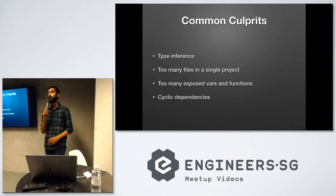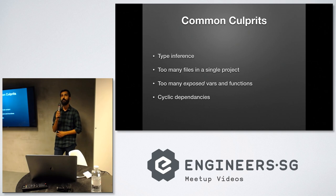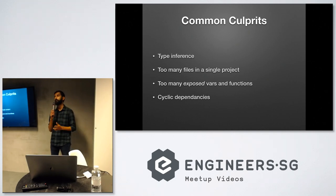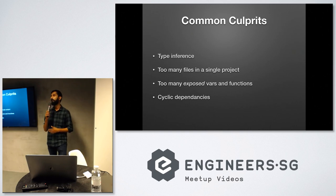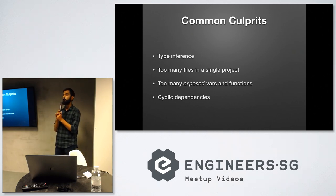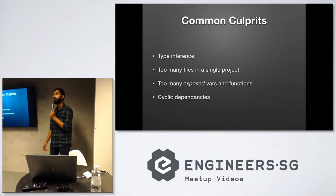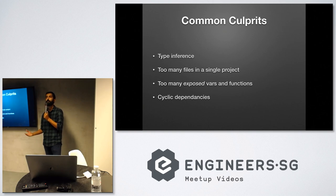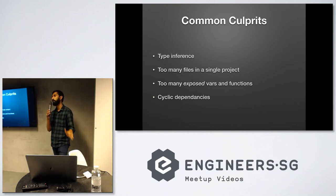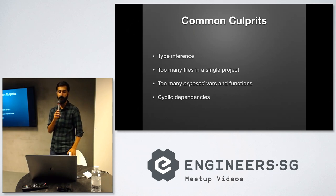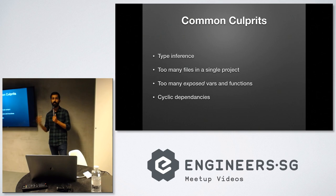First is type inference. Inside Swift, when you declare a var and give it a value, you do not need to specify the type. For example, if you say var message = "hello", you do not need to specify that message is a String. It turns out that really taxes the compiler when it comes to complex expressions on the right-hand side, which is why type inference contributes to your overall build time.